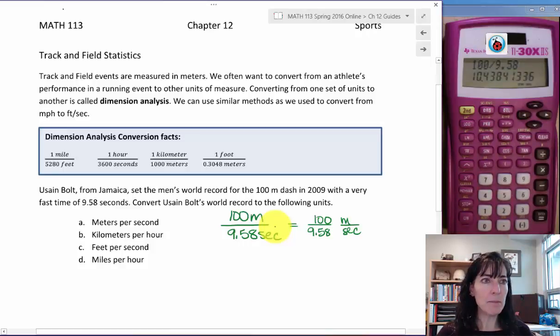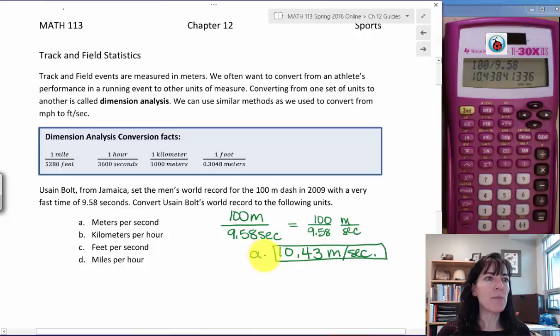So I get 10.43 meters per second. And remember, write it sideways when you're writing your results. So there is our answer for part A. That is in meters per second. So we just converted it to a unit rate. Just divide out that fraction and then make sure your units are in the right order for what it says. Meters per second. Meters over seconds. Perfect.